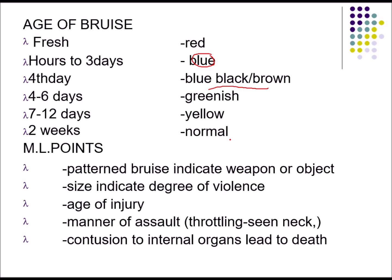The medico-legal points of contusions: pattern bruises may indicate the alleged weapon or object; size indicates the degree of violence — a large bruise shows greater force. Age of injury can be determined from color changes. Manner of assault can be identified, such as six-penny bruises around the neck in throttling caused by fingertips. Contusions to internal organs can cause severe hypovolemia, hemorrhage, and death.